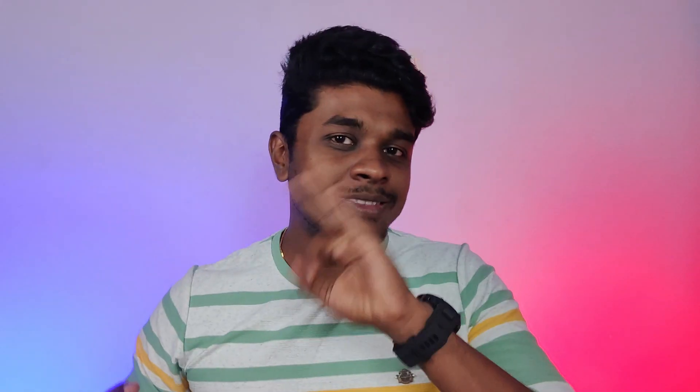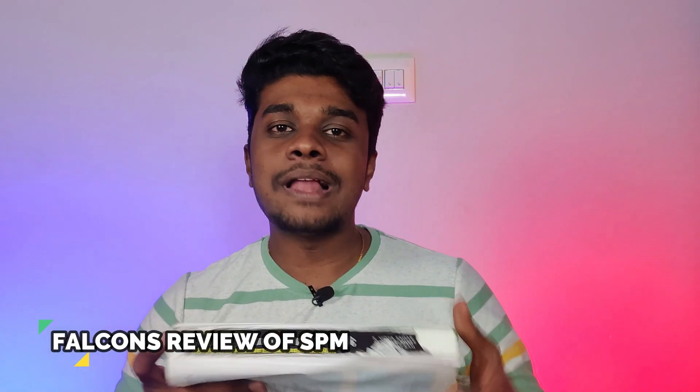The books I used for community medicine: I used three books total. First is Park, which is the bible of community medicine. Second is Vivek Jain, which is an MCQ-type book — it's really great because you can read topics like communicable and non-communicable diseases, health programs, and environment in an easy way. Third is Falcon's Review of Social and Preventive Medicine, which is a concise version of Park. You can find direct lines taken from the Park textbook, and topics like occupational diseases, family planning, and other short topics are given in a much better way. Most importantly, epidemiological study methods are absolutely best covered in Falcon's Review of SPM.